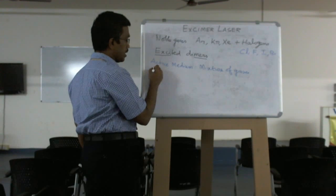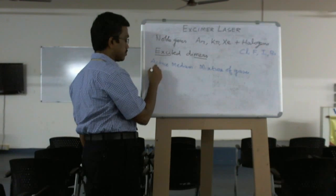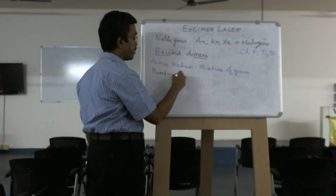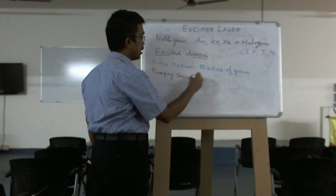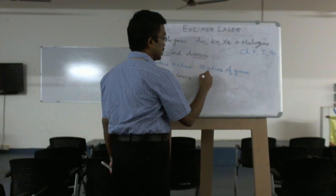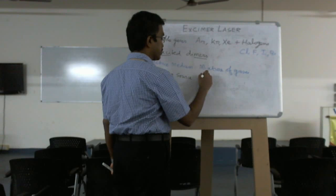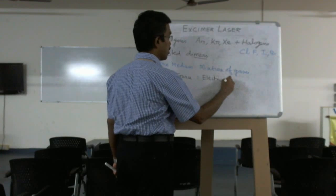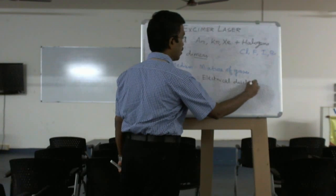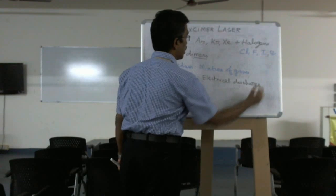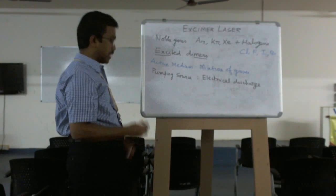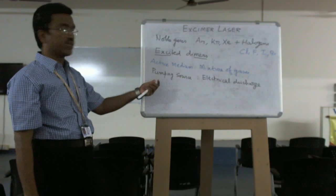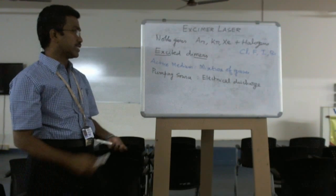Next one is the pumping source or pumping mechanism. Here, pumping source is electrical discharge pumping. And then the resonators - here no need of resonators. In this case, there is no need of any mirrors or something. Without this, we can get laser action.